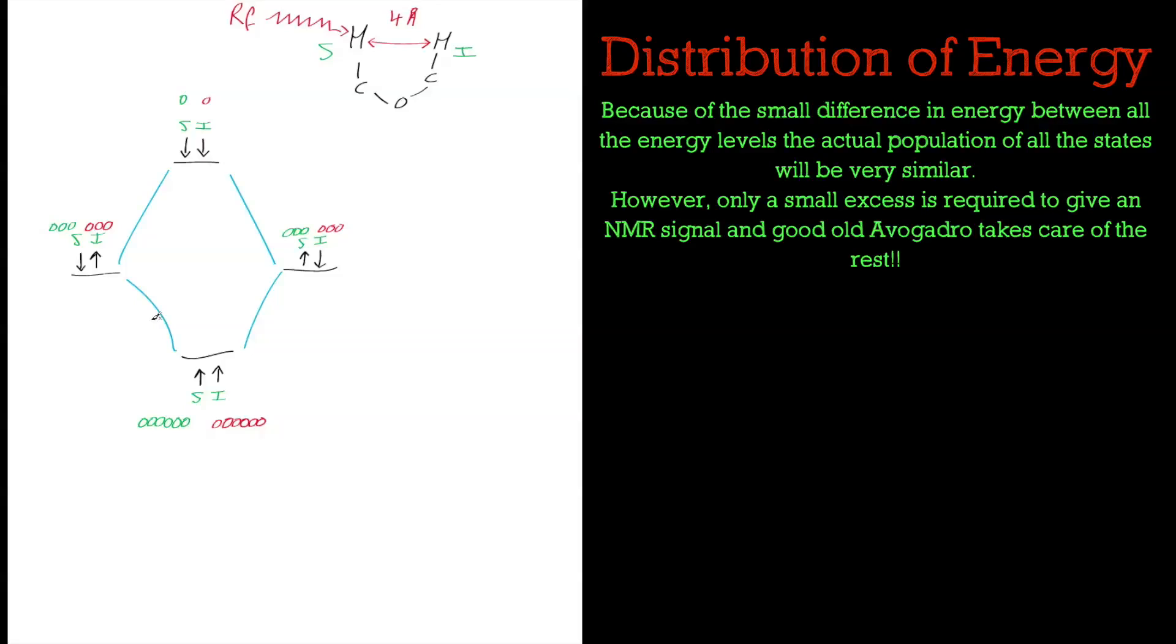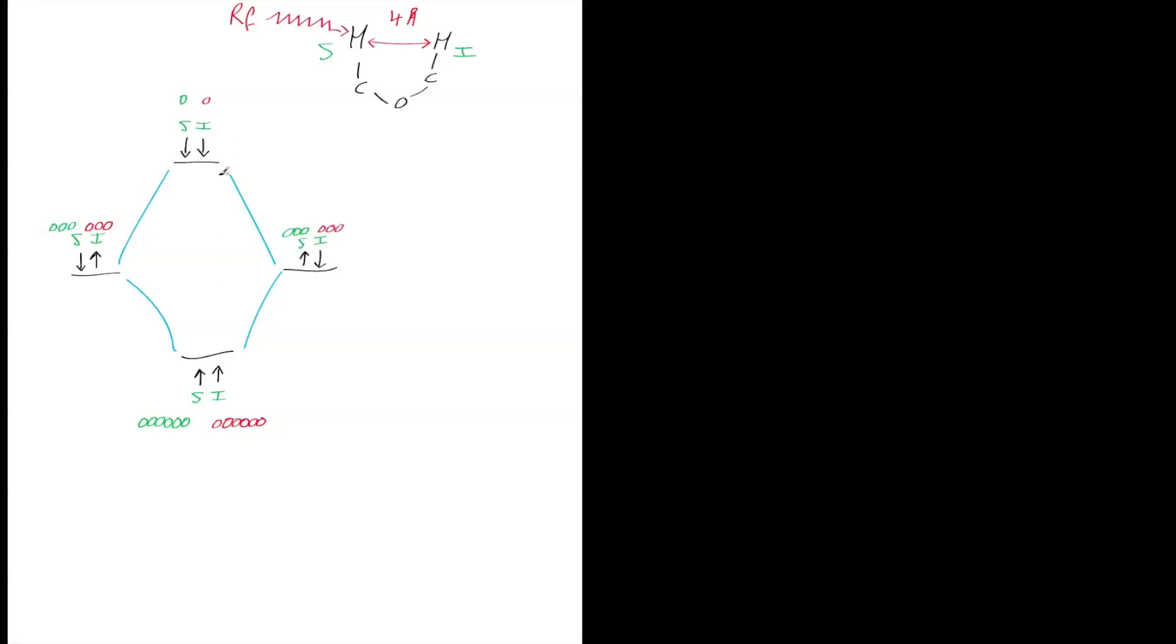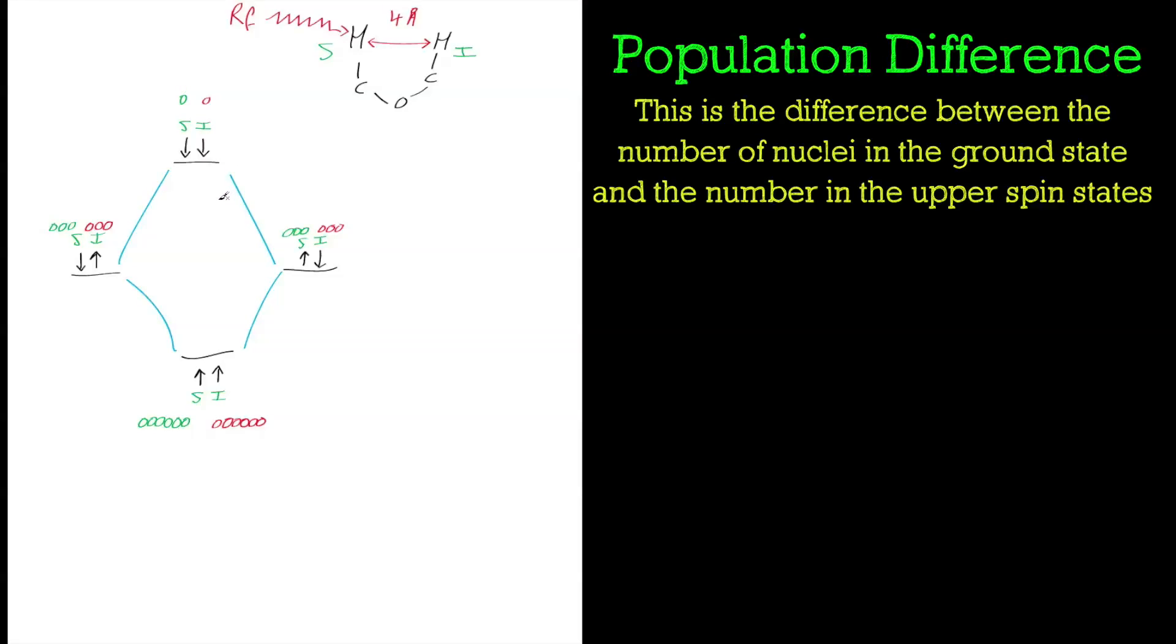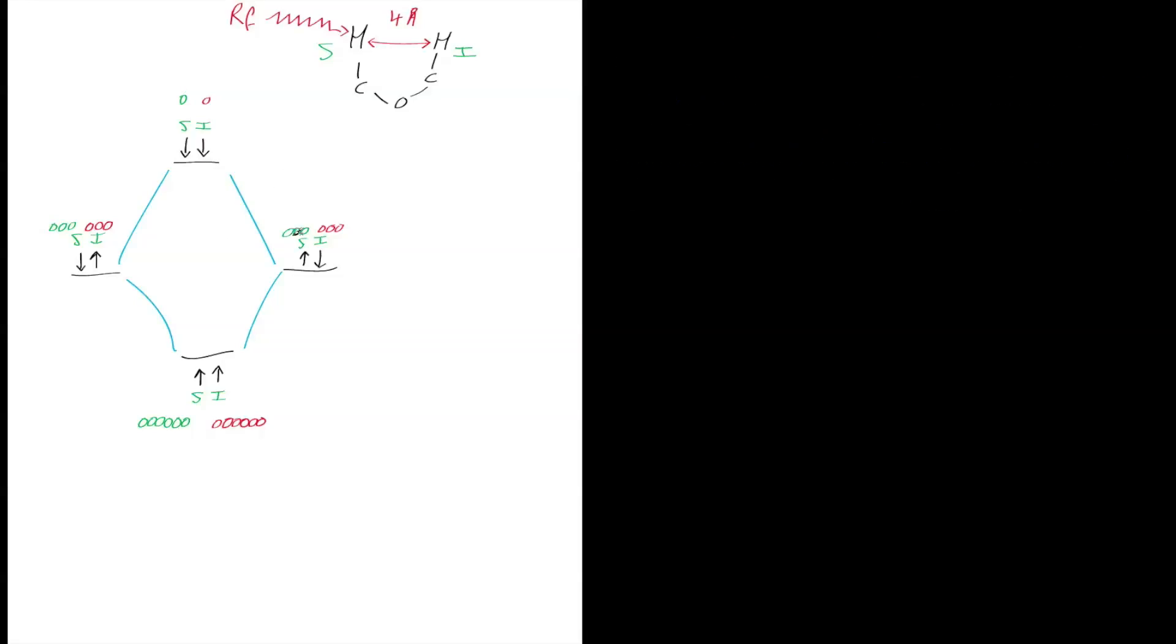In the real experiment, there'd be tens of millions of nuclei in one state, and obviously Avogadro's number of that as well. There'd be a very tiny difference, but the difference is what we detect. It's that population difference which gives rise to an NMR signal, because we're looking for a difference in the energies of the two states.